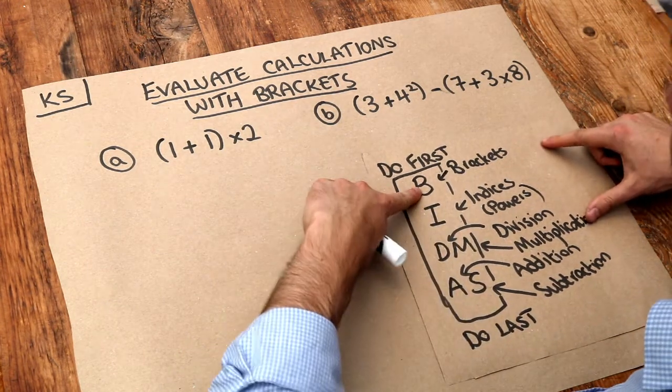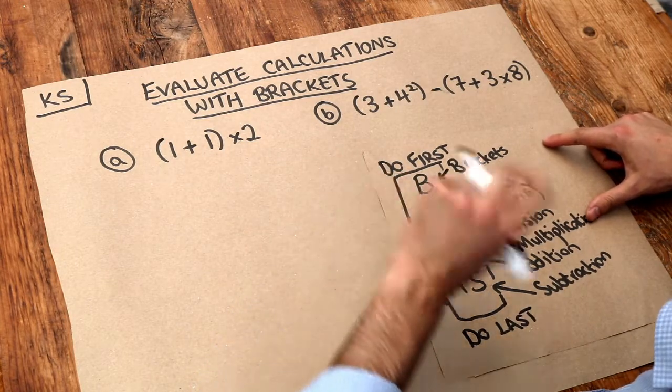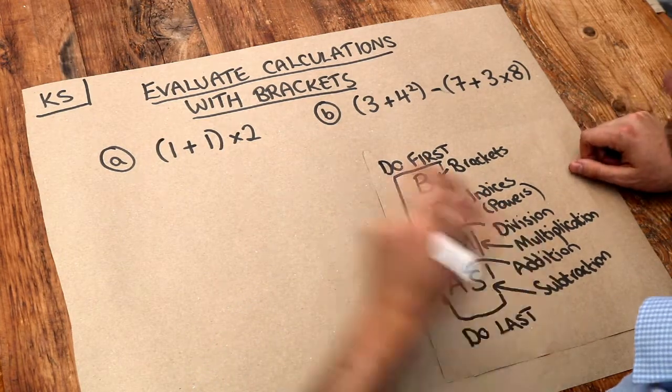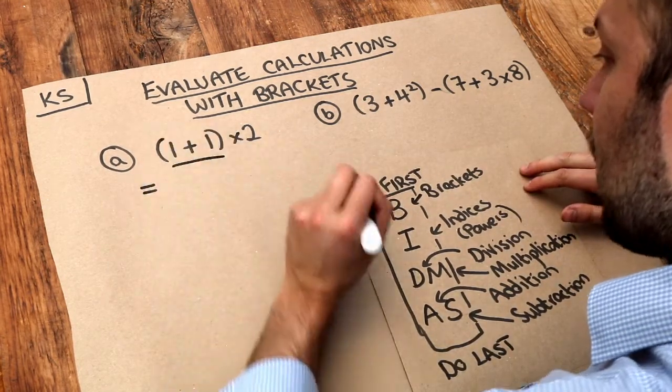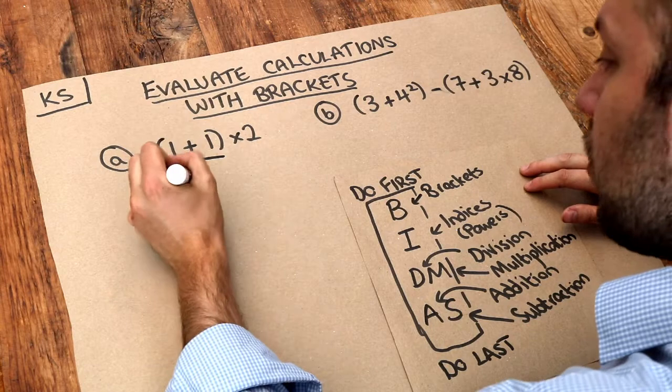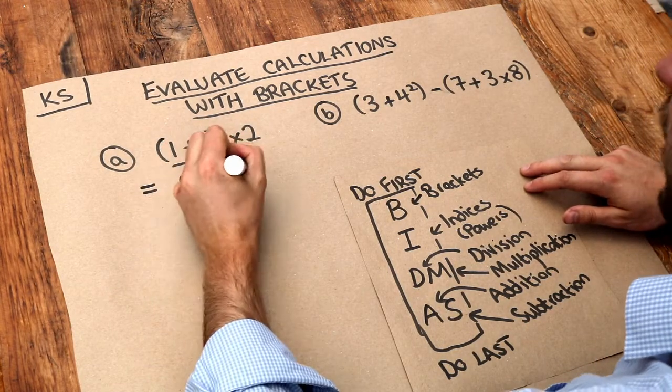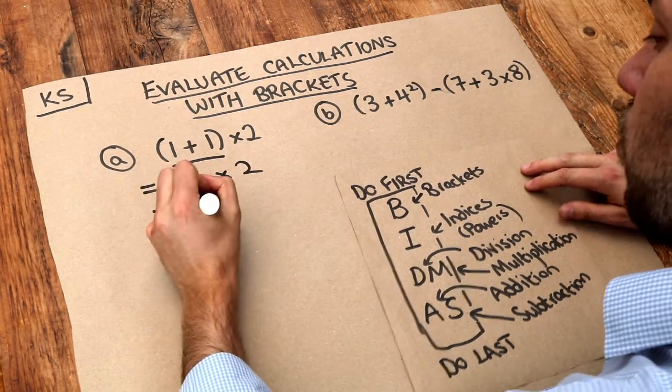Can you notice that brackets is at the very top of BIDMAS? So if you see brackets, you must do that first. So here we've got the brackets, so we're going to do that first. 1 plus 1 is obviously 2, and then we're multiplying it by 2 here, and 2 times 2 is 4.